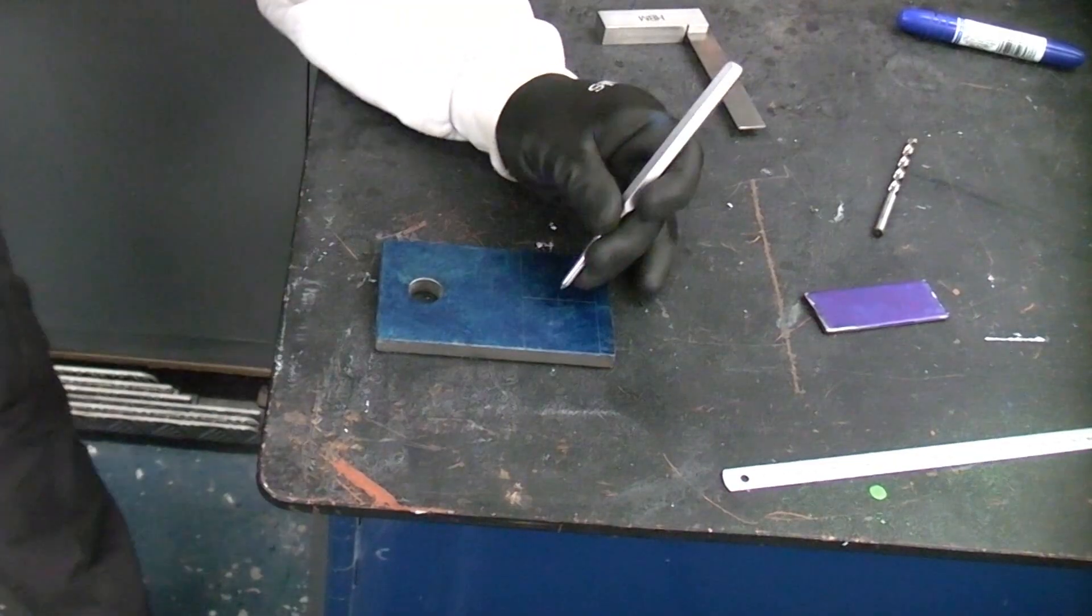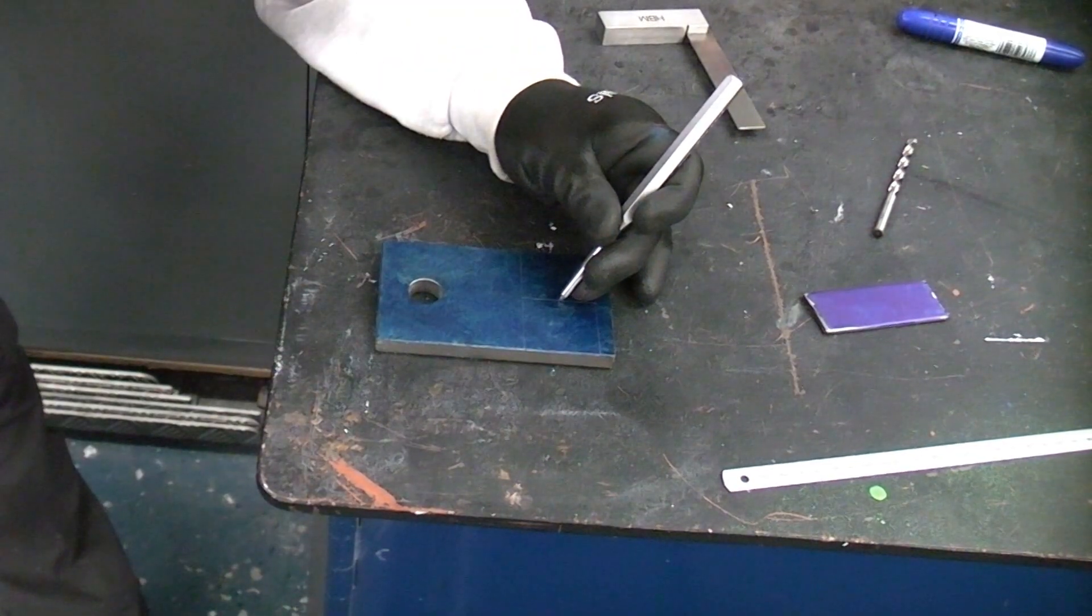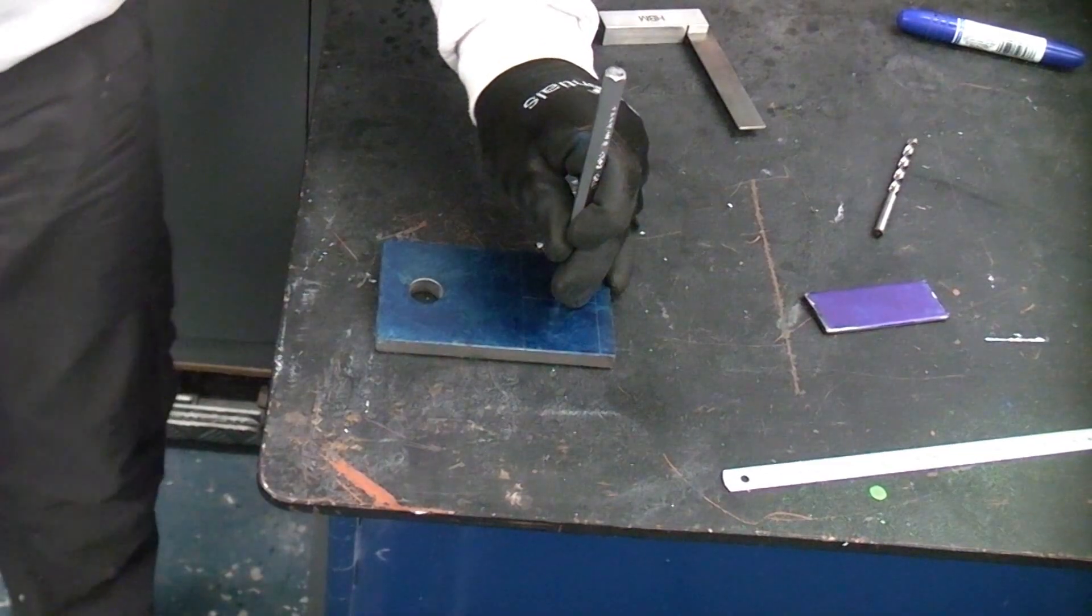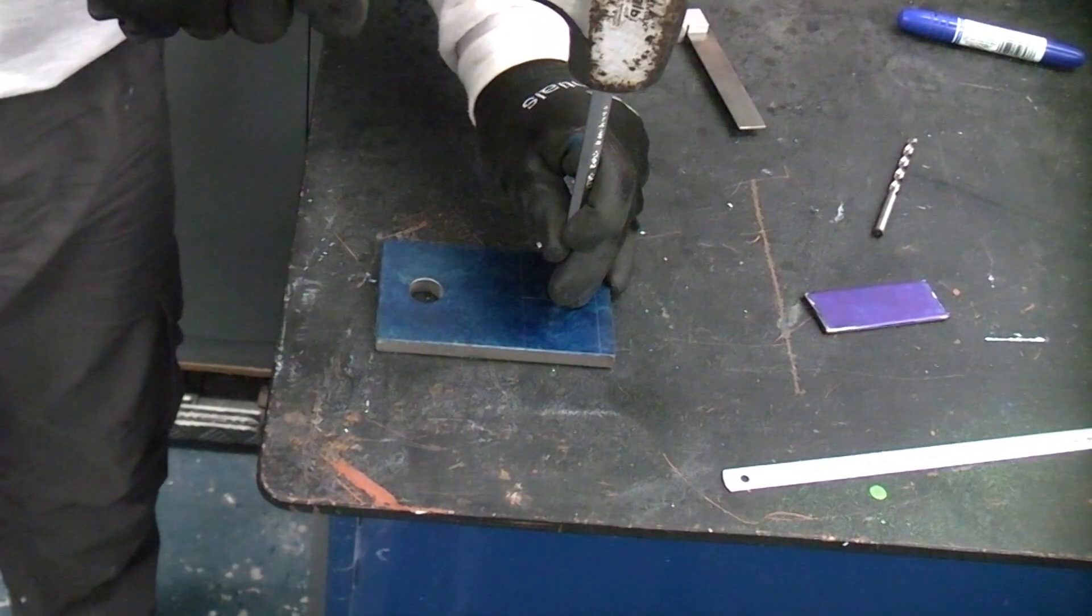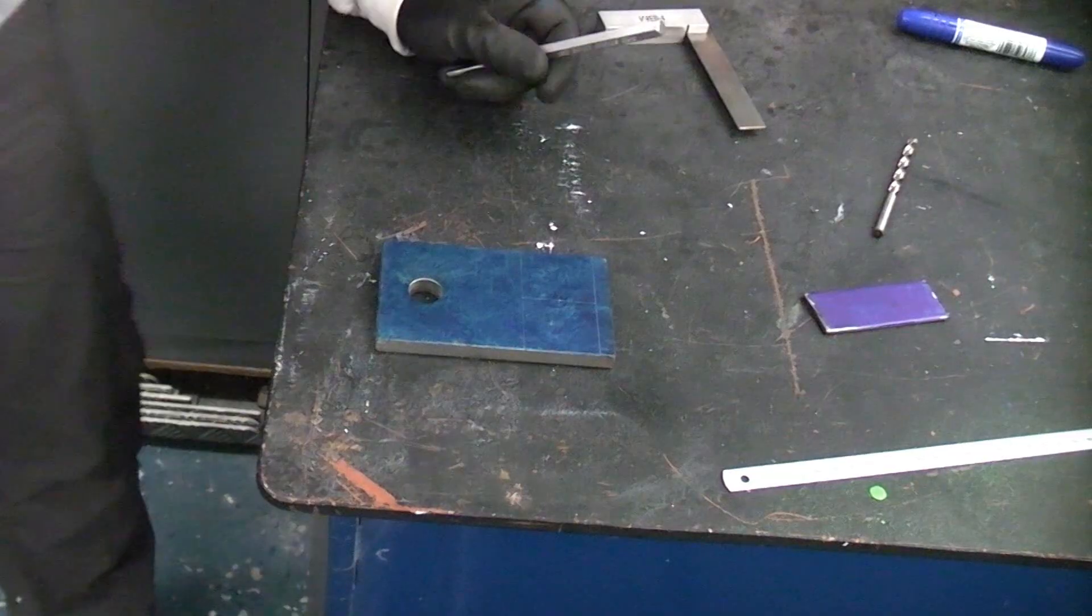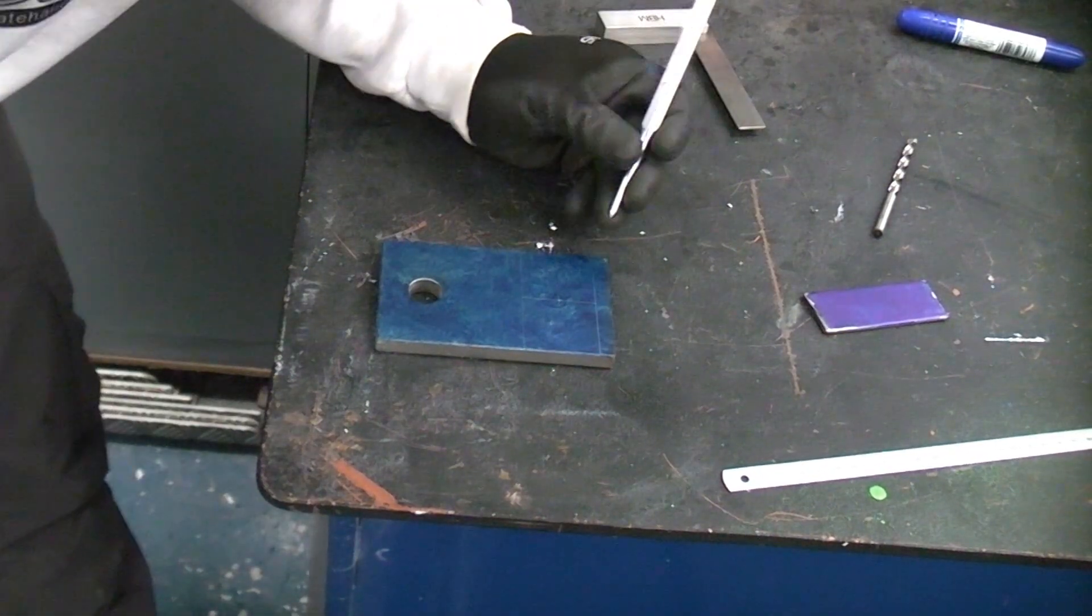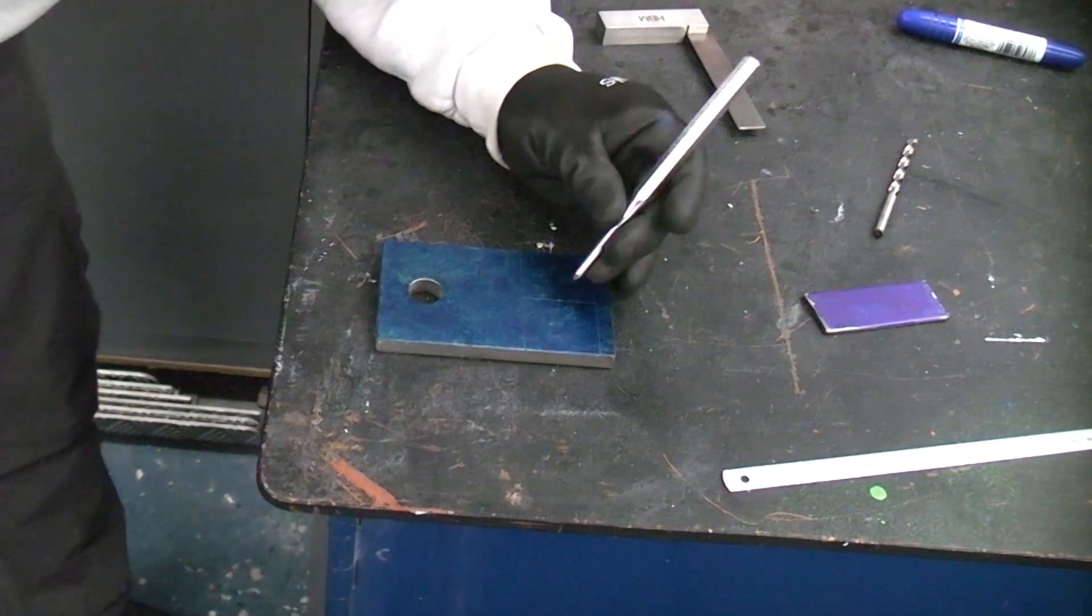So I'm going to take the centre punch and get it so that the point is exactly in the centre of where those two lines intersect. And I'm just going to give it a gentle tap. And then I'm going to check it to make sure it's in the exact right position. If it's not you can redo it.